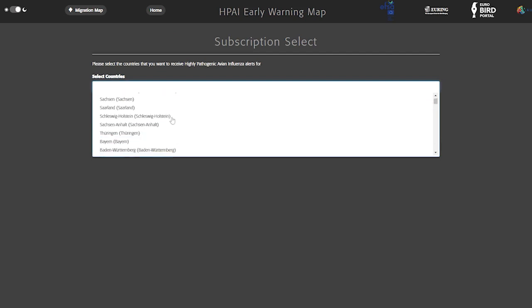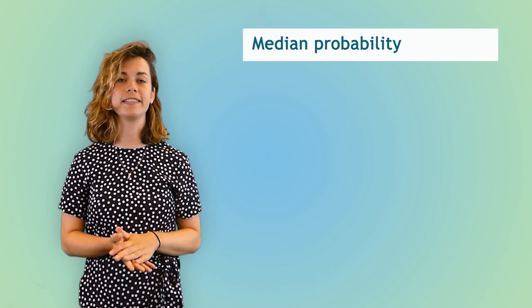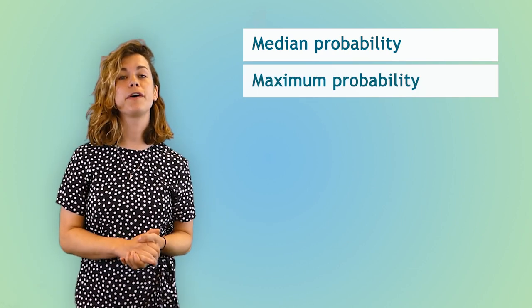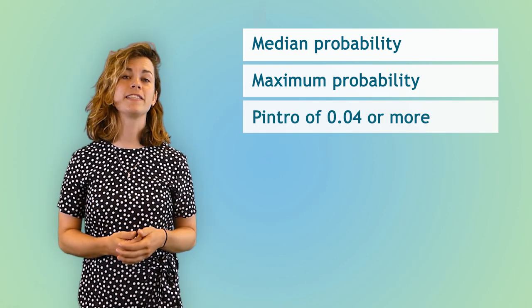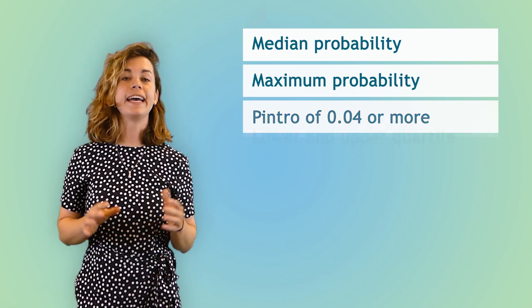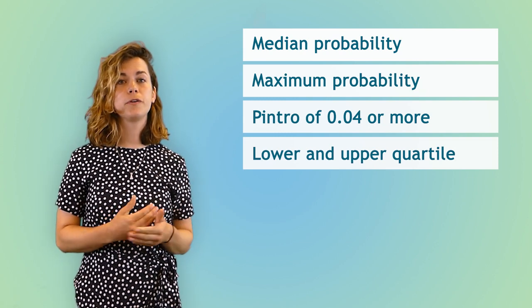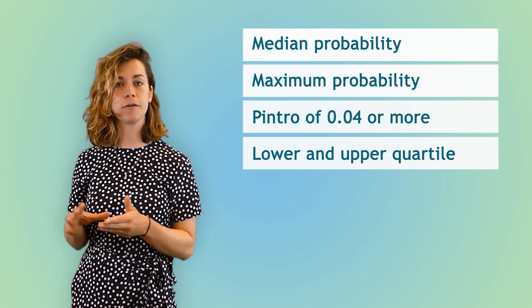Users can select multiple countries or regions to receive reports from. You can select the threshold value of P-INTRO above which you want to receive emails; the standard value for this is 0.04. The report also contains summary statistics of the probability of introduction in a selected country or region: the median probability, which is the probability that occurs the most; the maximum probability, which is the highest value of P-INTRO found in the selected country or region; the number of cells and the percentage of cells with at least 0.04 probability of introduction; and P-INTRO for the lower quartile and upper quartile of cells, so that's the value covering either 25% or 75% of all cell values when arranged in increasing order.